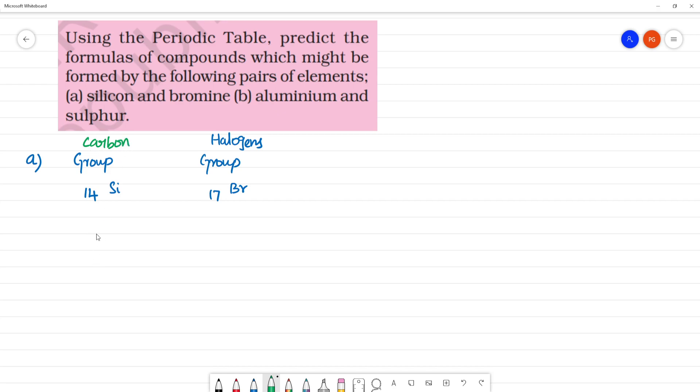So, carbon group will be having the valency 4. Otherwise, halogens will be having the valency 1, that is minus 1.